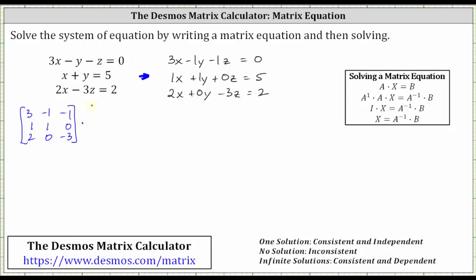Then we have times the variable matrix, which is a three by one matrix. The variables are x, y, and z, which are the elements in the three by one matrix. This equals, on the right we have a three by one matrix. The elements are the constants on the right side of the equation, which are 0, 5, and 2.